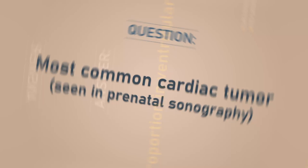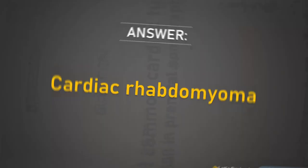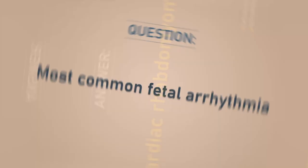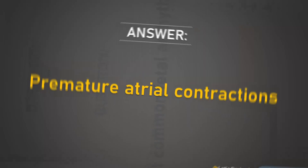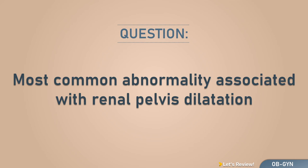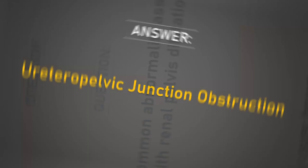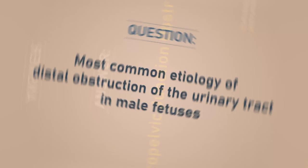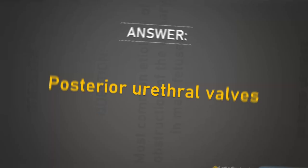Most common cardiac tumor: rhabdomyoma. Most common fetal arrhythmia: premature atrial contractions. Most common abnormality associated with renal pelvis dilatation: ureteropelvic junction obstruction. Most common etiology of distal obstruction of the urinary tract in male fetuses: posterior urethral valves.